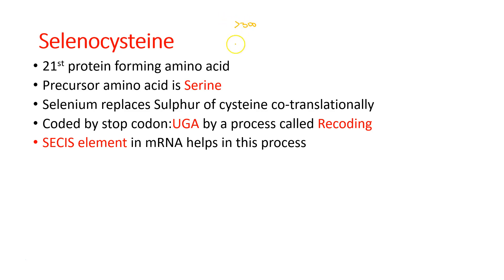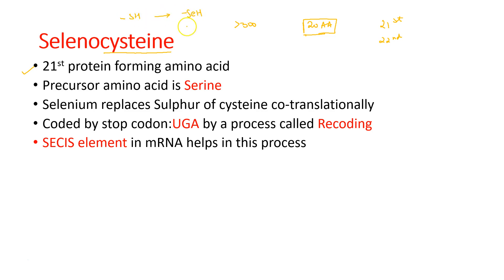There are over 300 amino acids in nature, but all proteins in the human body are formed from just 20 amino acids. Recently, a 21st and a 22nd amino acid have been discovered. The 21st amino acid is selenocysteine — in its structure, instead of the thiol group, sulphur is replaced by selenium. The precursor amino acid of selenocysteine is serine, and this amino acid is coded by a stop codon, UGA, by a process called recoding.